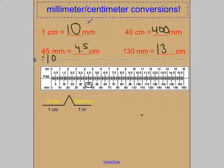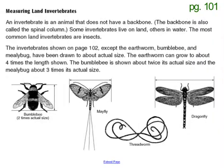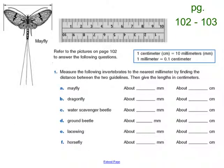So centimeters to millimeters, you can multiply times 10. Millimeters to centimeters, you want to divide by 10. In class, you're going to be measuring some invertebrates, which are animals that don't have backbones. And so you're going to be using your millimeter and centimeter ruler to convert between millimeters and centimeters. And also take a look at some real life invertebrates. See you later.